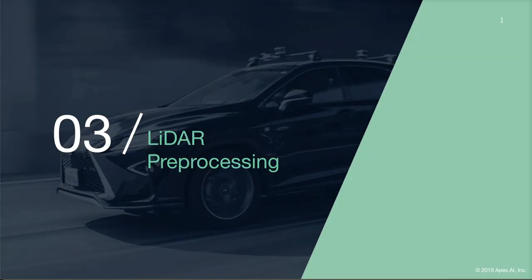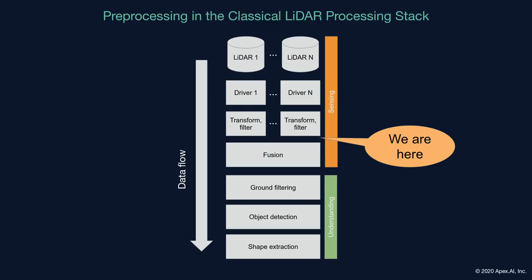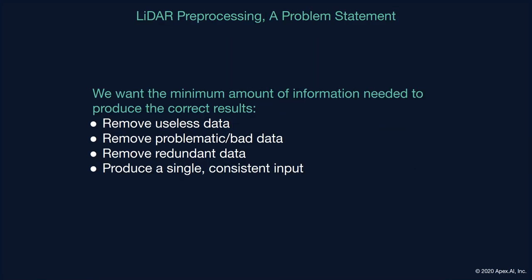In this section, students will learn about LiDAR preprocessing — its purpose and some basic operations therein. For preprocessing, we're in the sensing aspect of the LiDAR processing pipeline, talking about the transform filter nodes and the fusion nodes. From a downstream perspective, we want to take in the minimum amount of information which will allow us to produce the correct results. Any more than that and we're just using more CPU cycles and potentially adding noise. If you're familiar with statistics, this is the notion of a sufficient statistic.